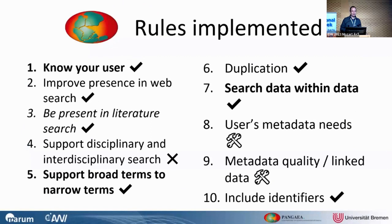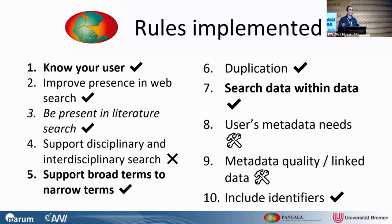Now, which of the 10 rules did we implement? As you can see in the overview, most of them are already done. There are only some — like number eight and number nine — which we are still working on. Since we are not really a cross-disciplinary repository, we don't have full support for users searching across disciplines in an easy way. I want to focus on a few rules today.